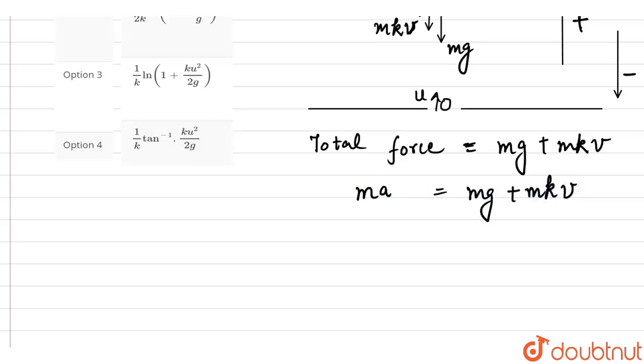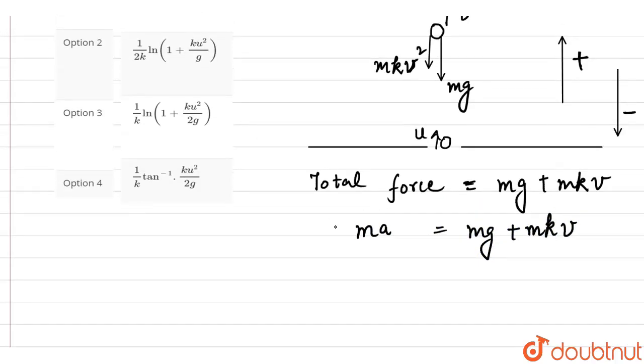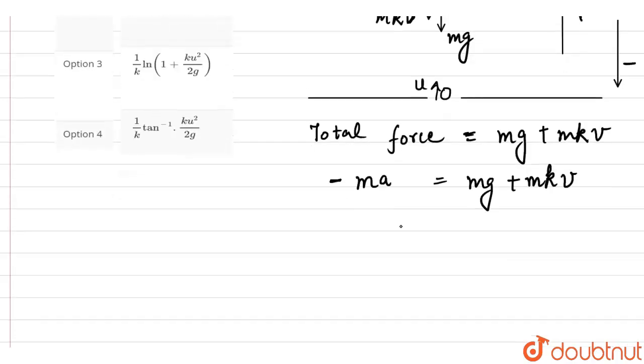Since this force is acting downwards, we have to apply a negative sign here. Removing mass from the equation, we get minus a equals g plus kv squared.